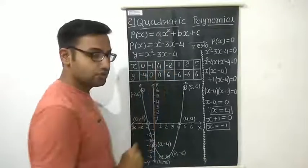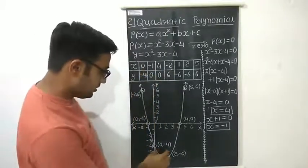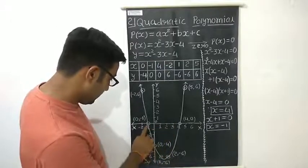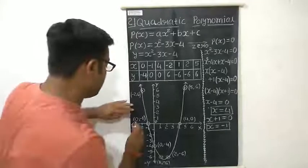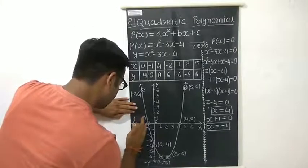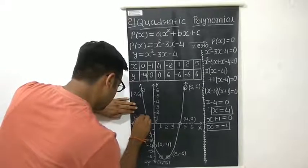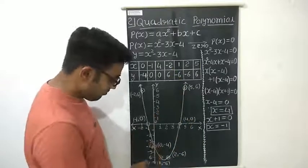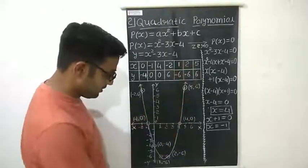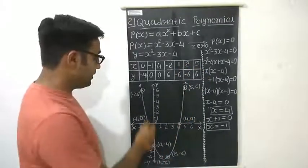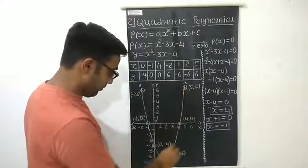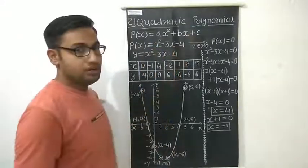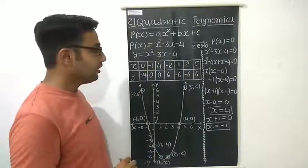We now plot these values. The point (0, −4) is plotted, (−1, 0) is here, (4, 0) is here, (−2, 6) is here, (2, −6) is here, and (5, 6) is here. By joining all these points, we get a curve, and this shape is called a parabola. So for a quadratic polynomial, we get this kind of parabolic graph.